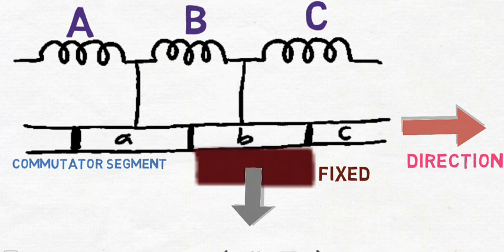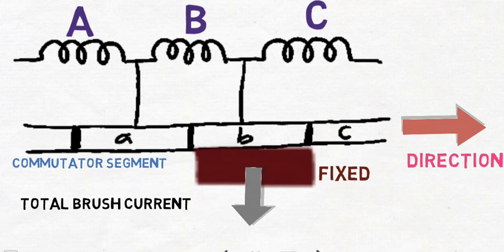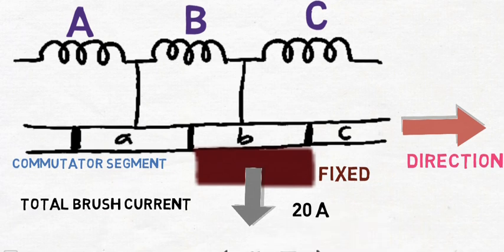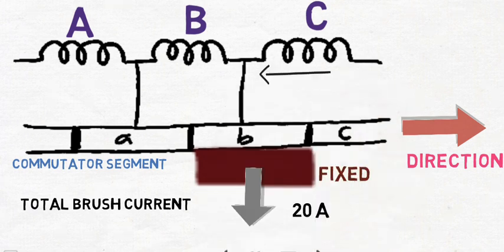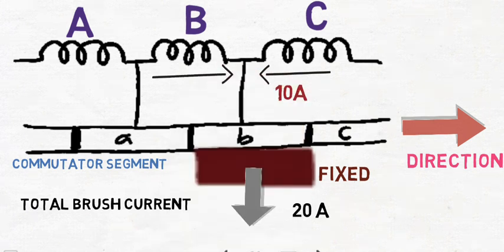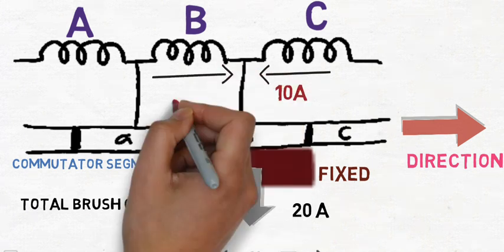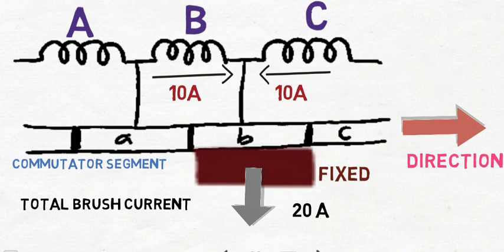Assume the total brush current at the output is about 20 amperes. This current is collected from coil C and coil B, where coil C gives 10 amperes and coil B also gives 10 amperes. The addition of these two currents — 10 plus 10 — is 20 amperes at the brush side.